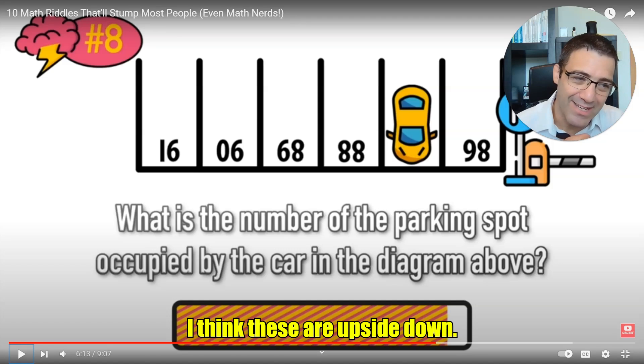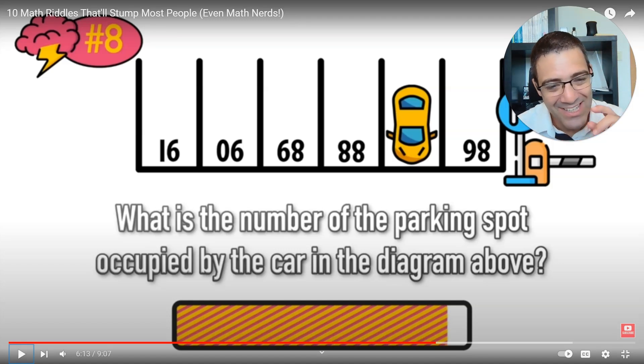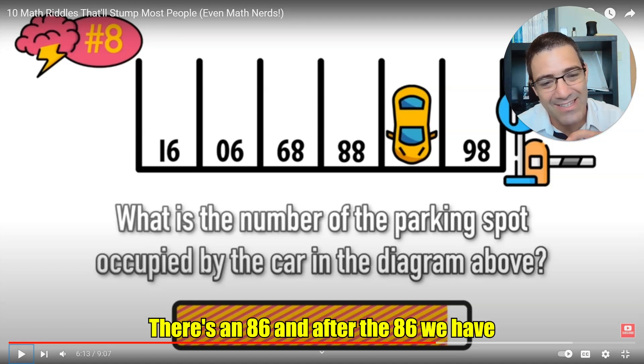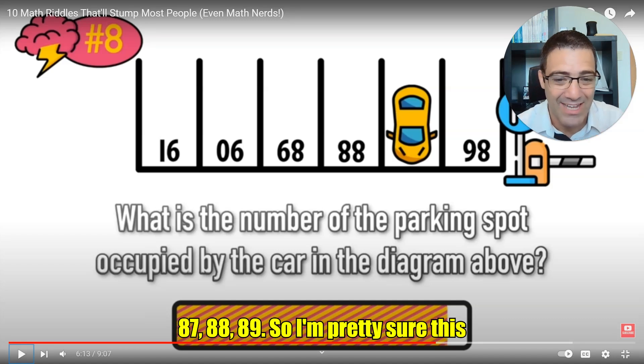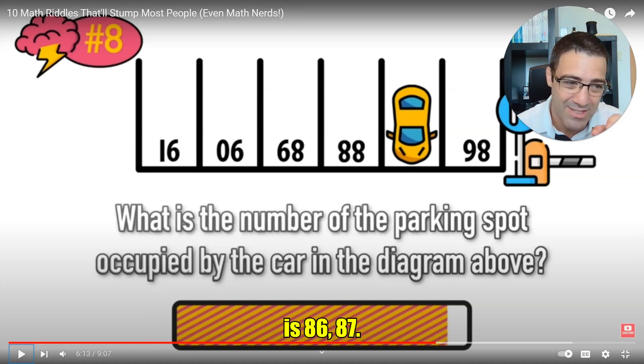I think these are upside down. There's an 86 and after the 86 we have 87, 88, 89, so I'm pretty sure this is 86, 87. Tricky, tricky.